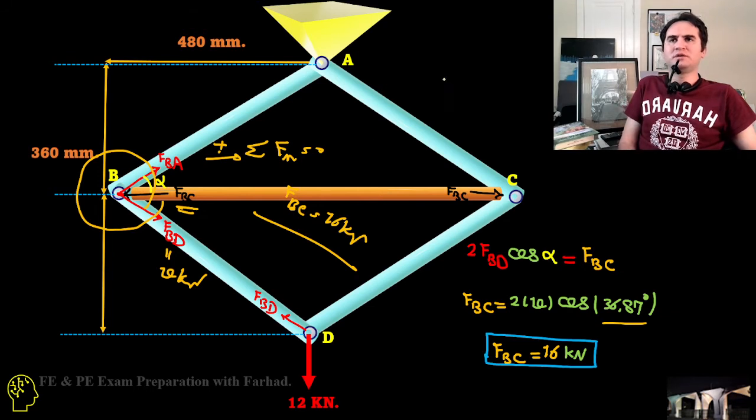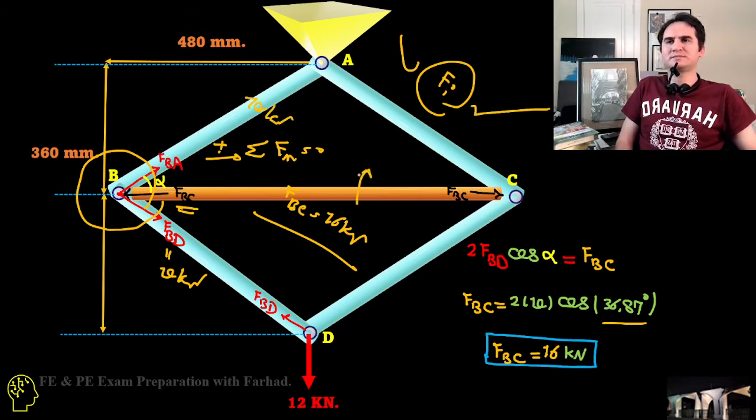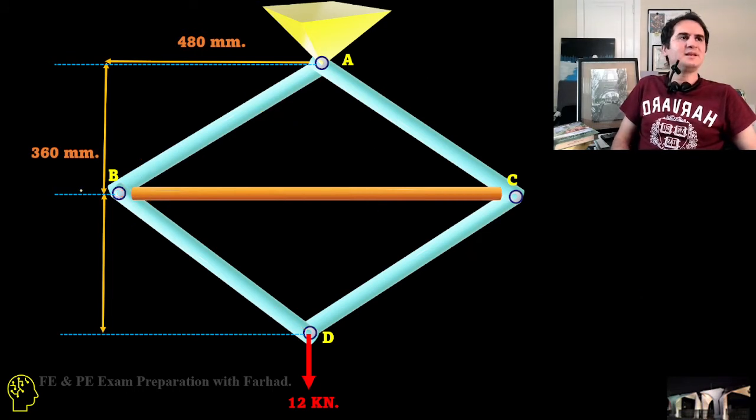So far for our equation we know what is our forces in terms of strain energy for all the members. These are 10 kilonewton and the middle section is 16 kilonewton. Next stage we would calculate the length and area for all our members.